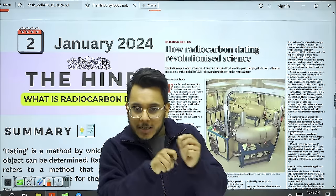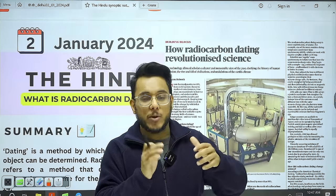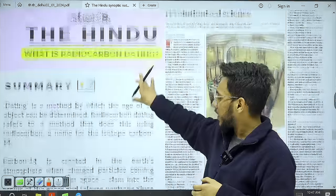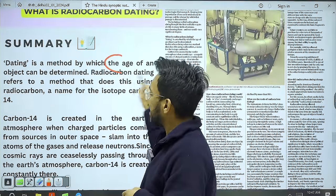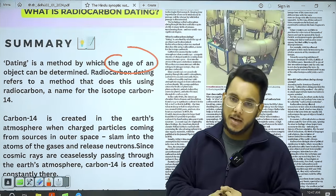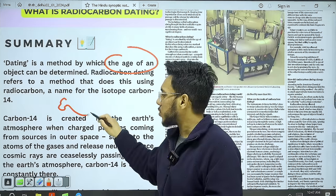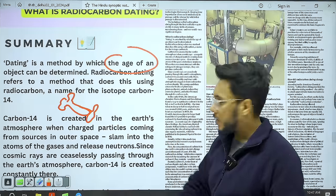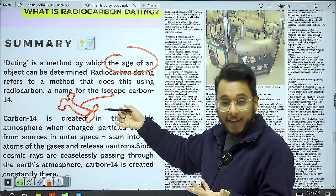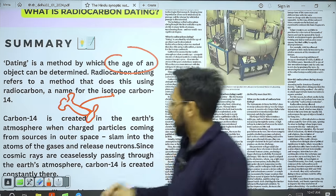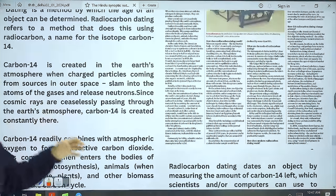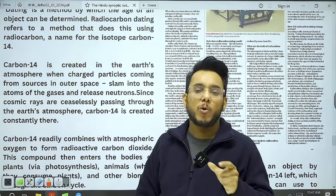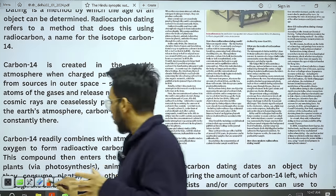Dating is a method by which the age of an object can be determined. For example, if you find a bone of a dinosaur, you can find its age through radiocarbon dating. The key concept is C-14 dating — Carbon-14 dating. Cosmic rays from outer space are constantly coming to the Earth, carrying charged particles.